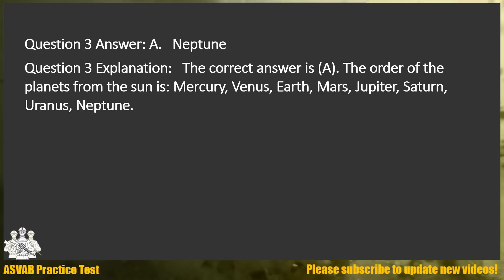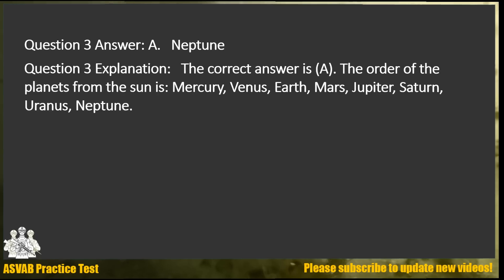Answer: A. Neptune. Explanation: The correct answer is A. The order of the planets from the sun is Mercury, Venus, Earth, Mars, Jupiter, Saturn, Uranus, Neptune.